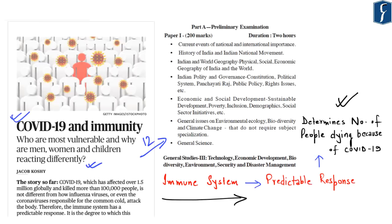This topic is important from the perspective of General Science in your prelims examination, and in mains it is covered under GS Paper 3 specifically with respect to Science and Technology. Questions can be expected on various aspects of COVID-19 from the perspective of general science. With this, let's move on to our next news discussion.